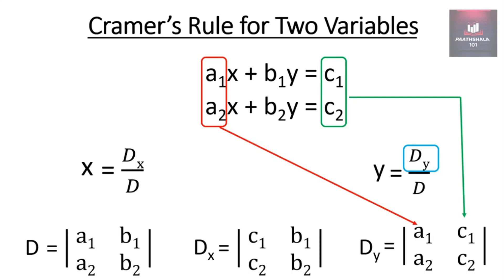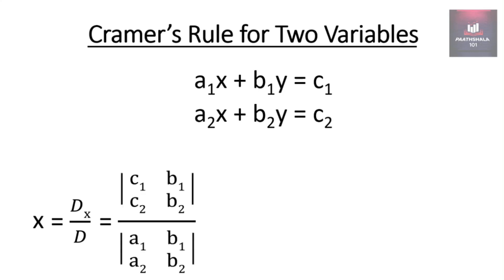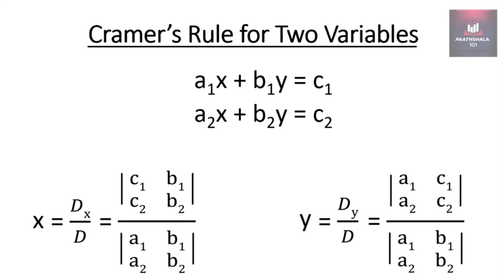So x = Dx/D. We have found Dx and D which we substitute here. y = Dy/D, which we have also found and substitute into this equation. This is how we get the values of x and y using Cramer's rule.